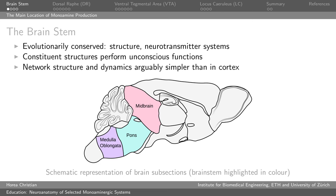This means that if you're doing translational neuroscience, whatever statements you're able to make about these neurotransmitters in the mouse have a higher probability of being accurately translatable to humans. The constituent structures in this part of the brain perform a number of tasks, most of which are non-volitional.